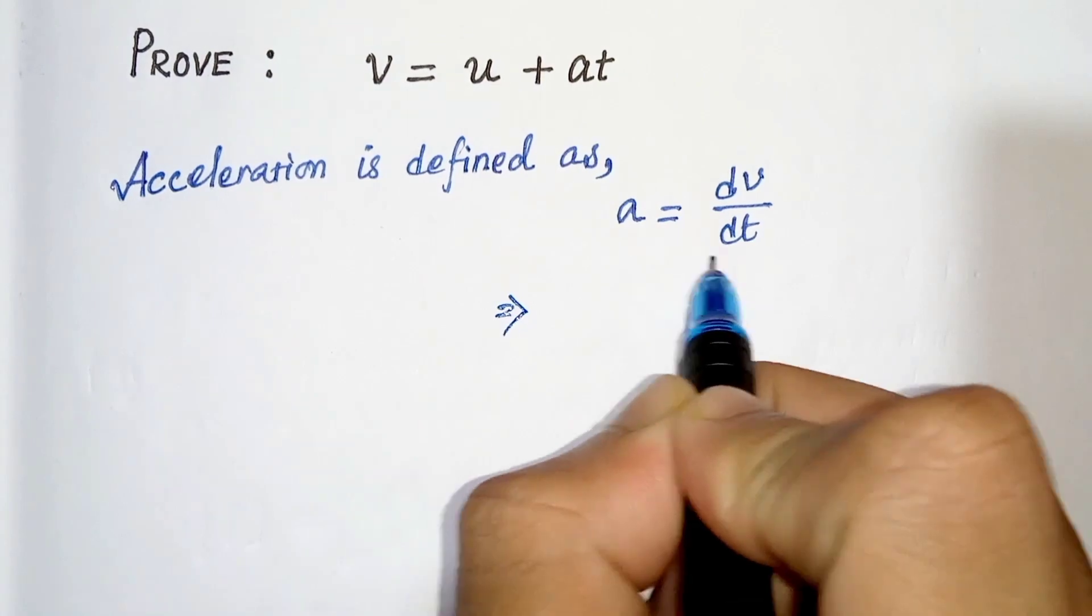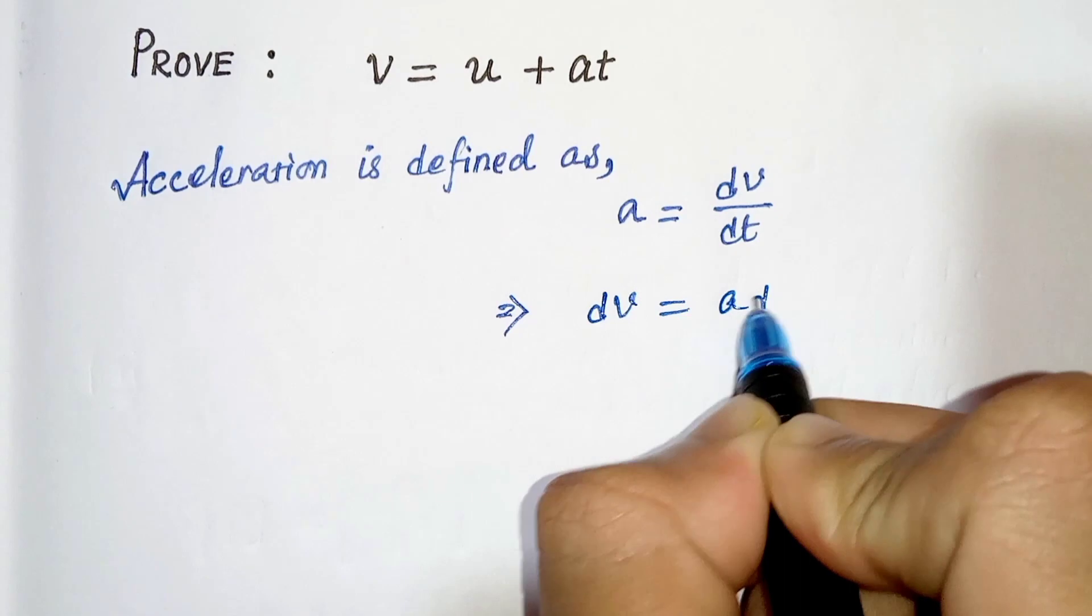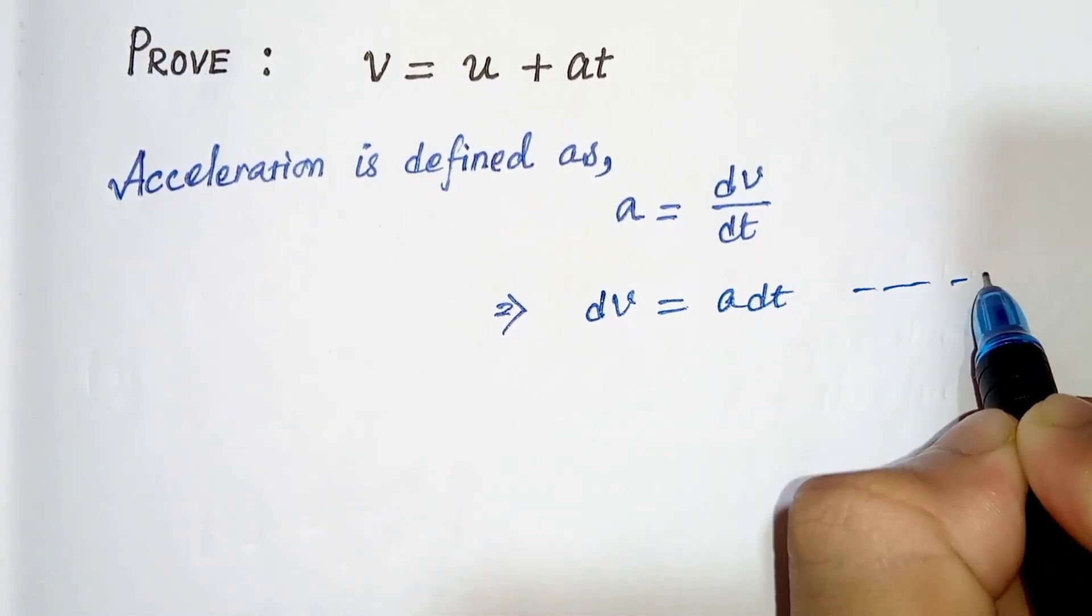So we can write this as a times dt equals dv, that is, dv equals a dt. This is our equation 1.